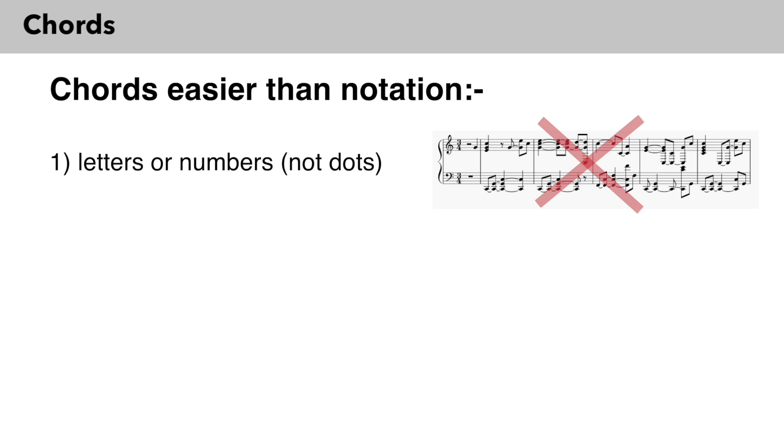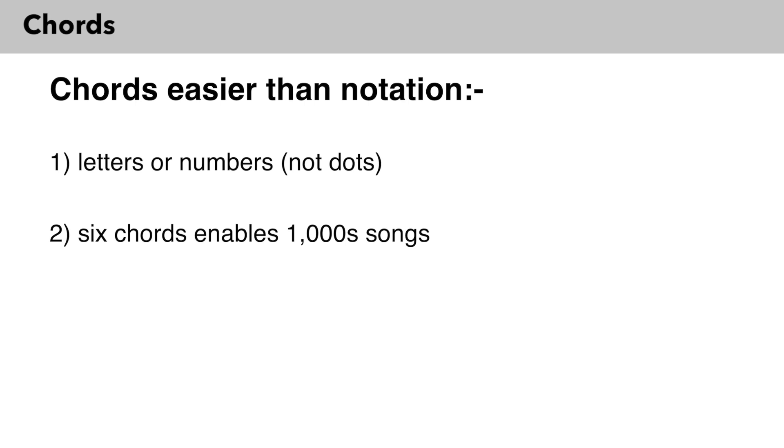Playing by chords is much easier than playing by notation for three main reasons. Number one: you don't have to learn the abstract language of dots as chords are called either by letters or by numbers. Number two: you can play thousands of songs just using the six standard chords. Number three: you don't have to think about all the individual notes being played, just put your fingers in the shape of the playing pattern and move your hand up and down the keyboard to play the different chords.